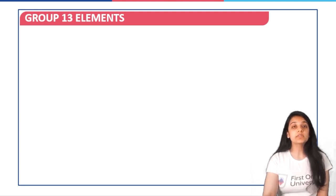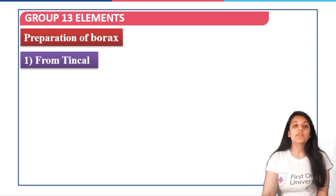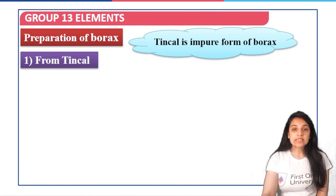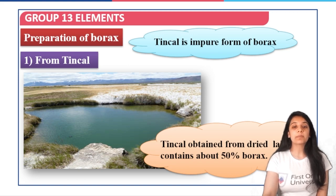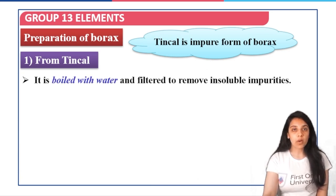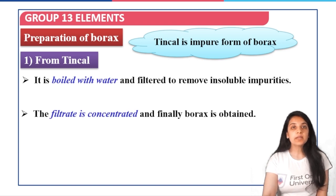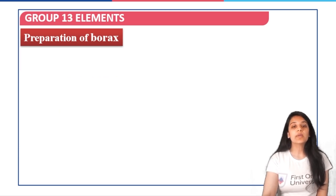Borax is prepared by three methods. The first is from tinkle, which is the impure form of borax, obtained from dried lake beds containing approximately 50% borax. The impure tinkle is boiled with water, filtered to remove insoluble impurities, and the filtered solution is concentrated by further heating to yield pure borax.